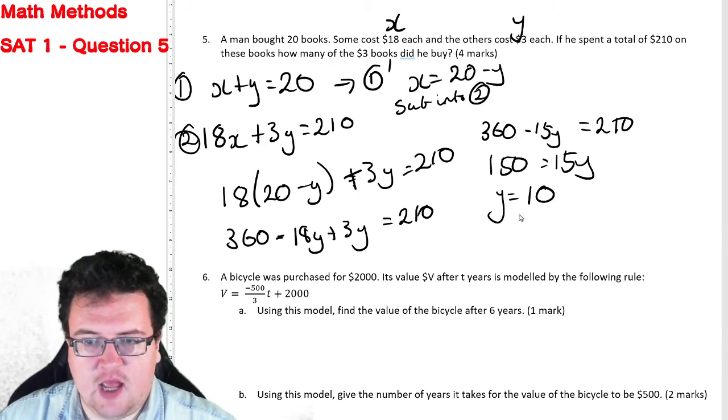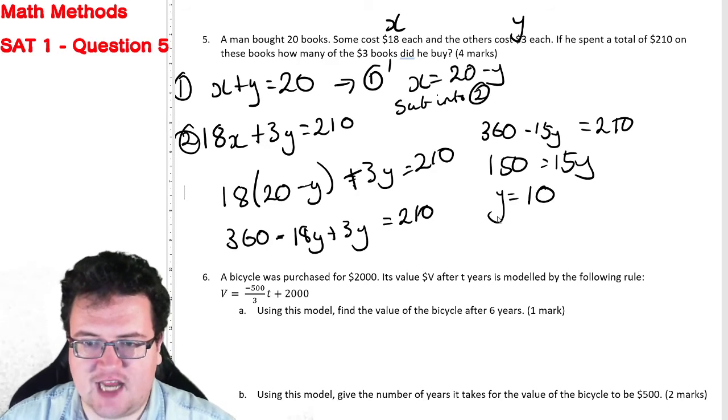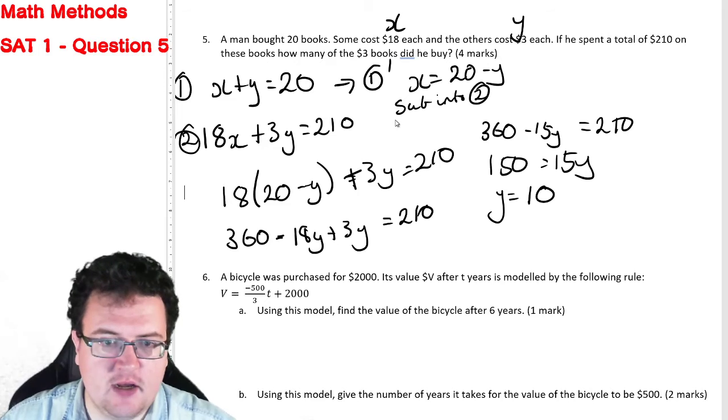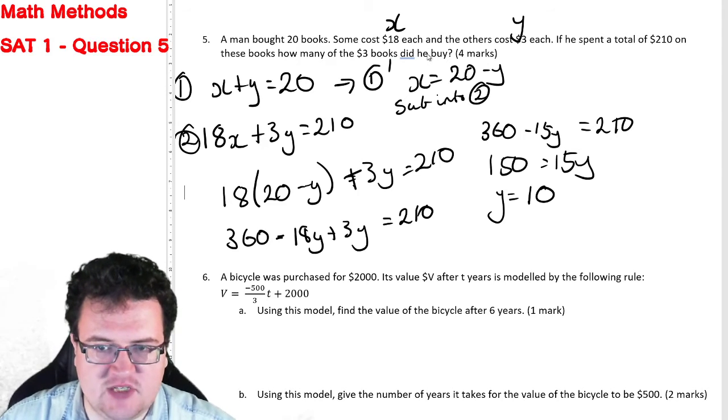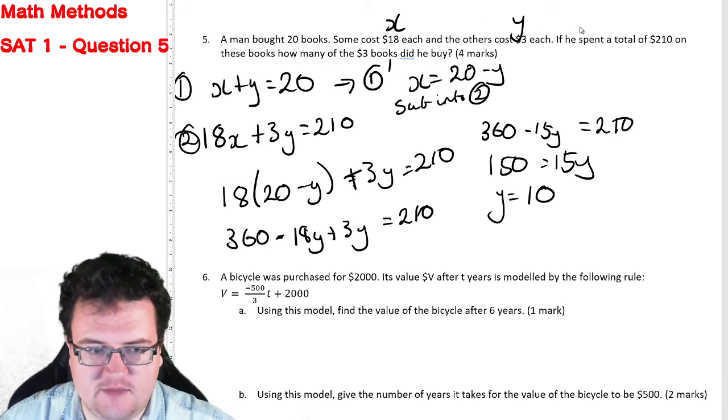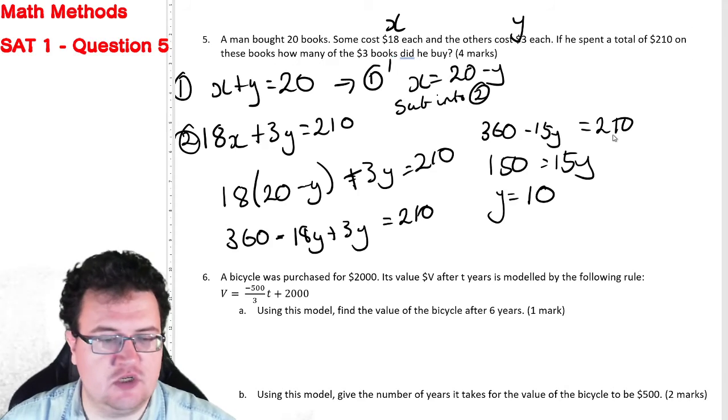All right, so how many of the $3 books did you buy? 10. And we know that makes sense because if we take Y equals 10 and put it into here, 10 plus 10 is 20. And 18 times 10 plus 3 times 10 happens to also equal 210.